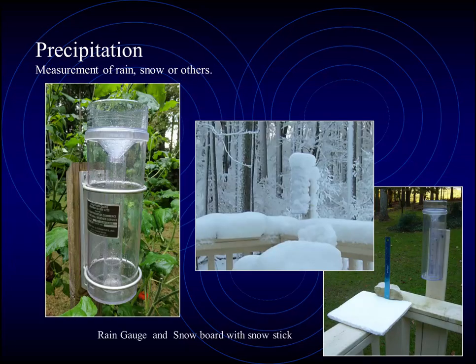Precipitation certainly affects our lives on a regular basis. The measurement of rain, snow, sleet, and other precipitation may factor into our weather forecasts. Here we see a rain gauge. The one on the left is the standard National Weather Service 4-inch rain gauge. A funnel leads to an inner tube, which amplifies the catch so we can measure rain very carefully, with precision down to one one-hundredth of an inch.